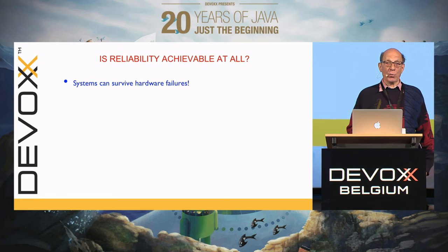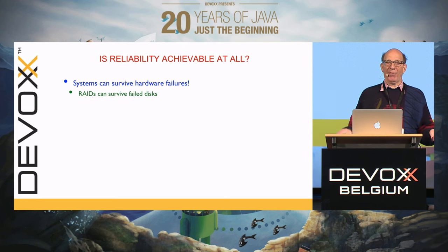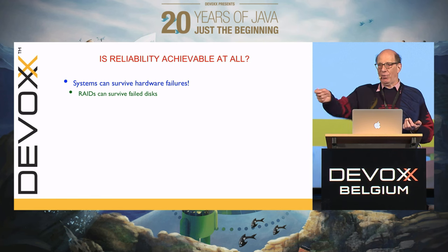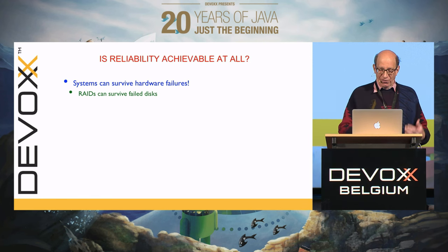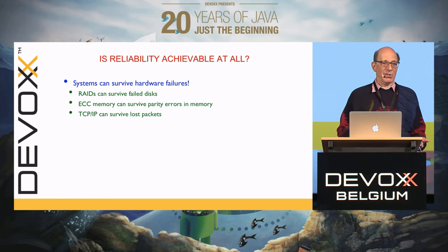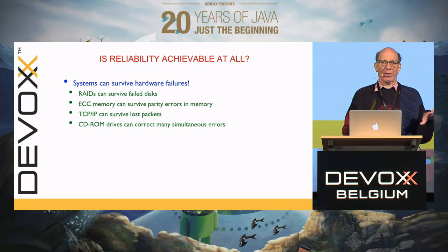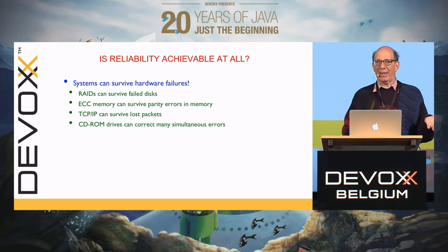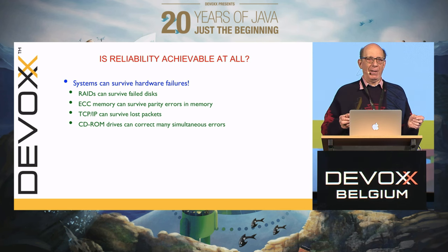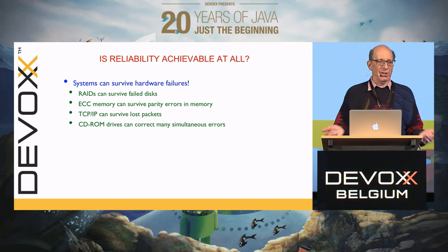Systems can survive hardware failures. For example, a RAID can survive a failed disk — if a drive fails, there's redundancy and it can rebuild in real time. ECC memories can survive memory bit failures. TCP can survive lost packets — it times out and sends the packet again. CD-ROMs can correct many errors. About three quarters of the bits on a CD-ROM are error correction bits. A 700 megabyte CD-ROM actually has a capacity of three gigabytes and all the extra bits are error correction. That's why they work so well.